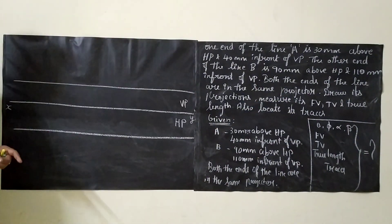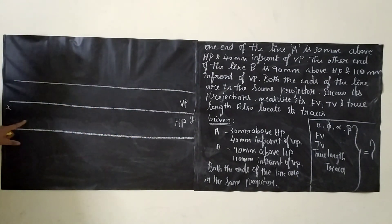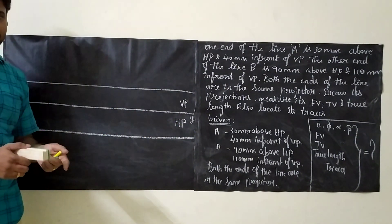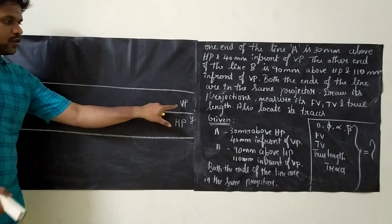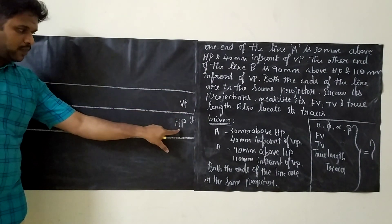The first step is we need to draw the reference line. The reference line is XY. According to first angle projection, we will be drawing the vertical plane above and the horizontal plane below.